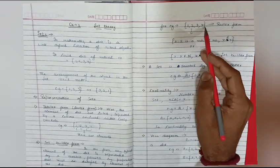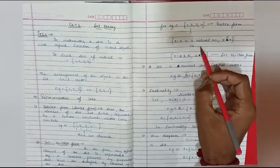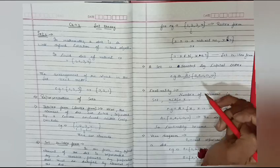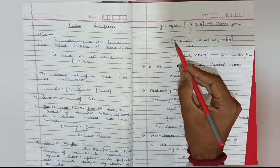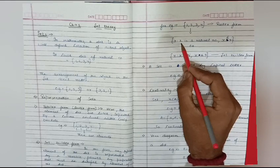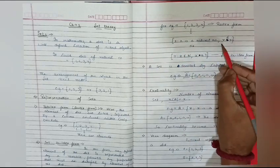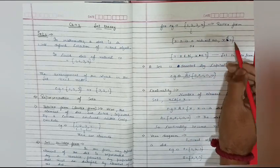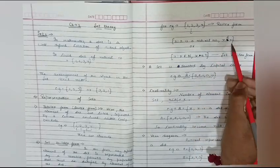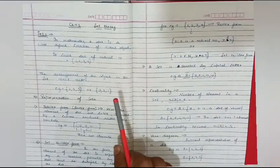Like 1, 2, 3, 4. This is our Roaster Form. If we represent it in set builder form, we will write in mathematical language: x such that x is a natural number and x is less than or equal to 4. This is our set builder form.